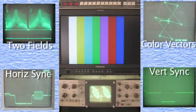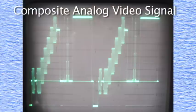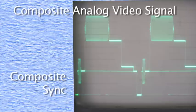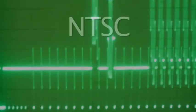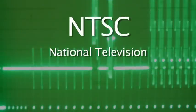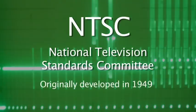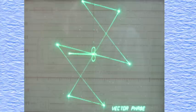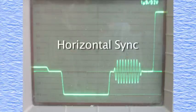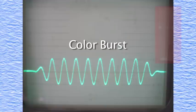Sync within a composite NTSC video signal refers to the pulses and sine wave bursts that allow for the proper alignment of the visual information elements that make up the picture you see on a TV screen. This tutorial will introduce you to the various elements that make up the composite sync within the NTSC analog video signal. There are three basic elements to composite sync: horizontal, vertical, and color.